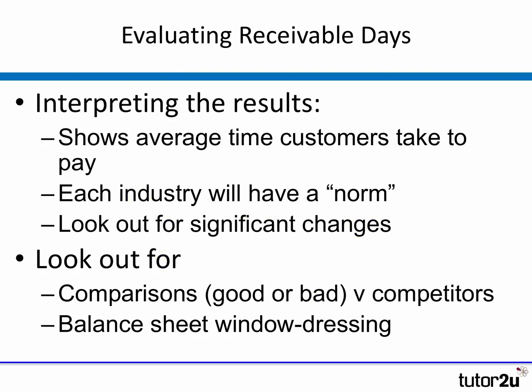The key with receivables days is to interpret the number. It shows the average time it takes customers to pay, and that will vary from market to market and industry to industry. In some industries it might be normal to take two to three months; in others, customers may be expected to pay within 7 to 14 days. A significant increase in receivables days might suggest the business has issues collecting debts. Also note that trade receivables come from the balance sheet, so it's possible to manipulate that number at the balance sheet date to reduce the amount shown as outstanding.